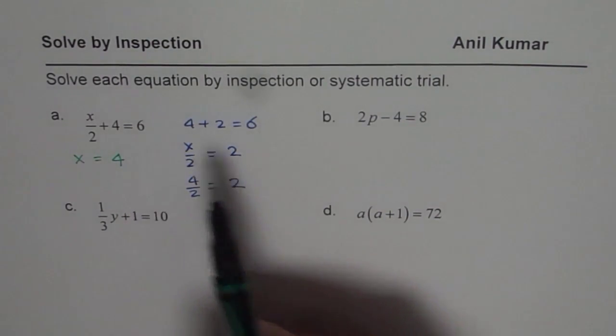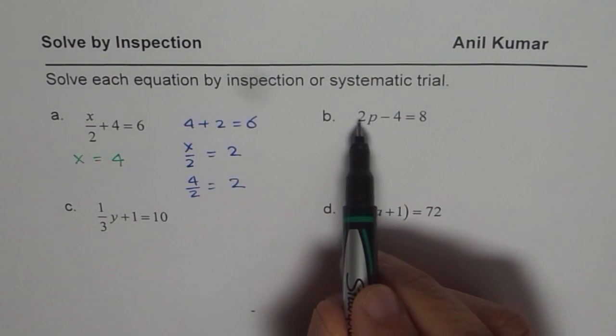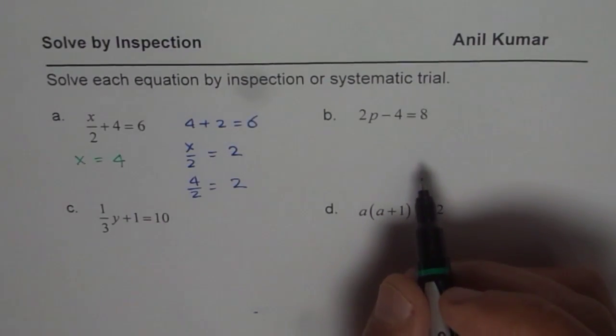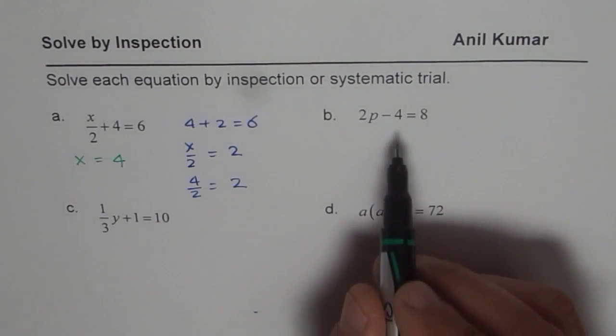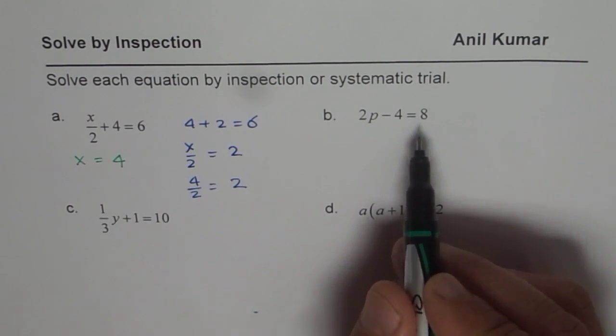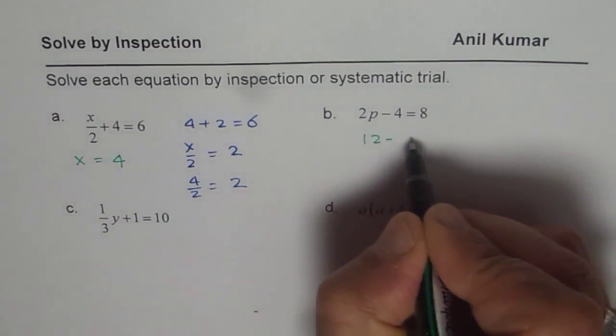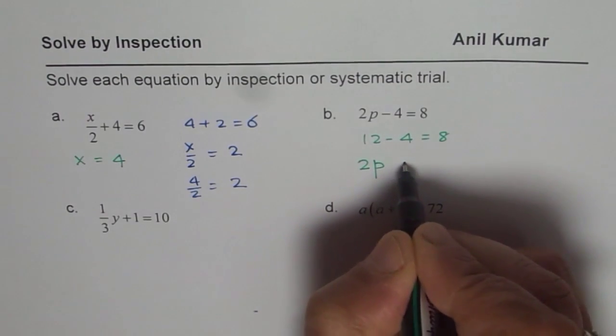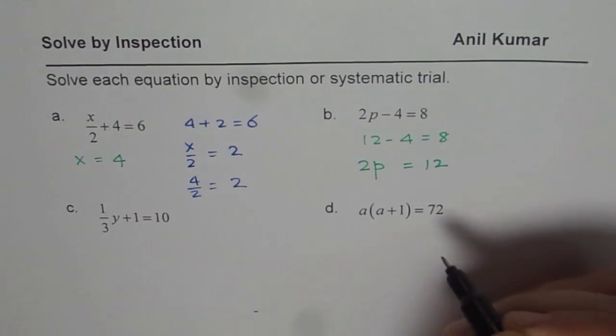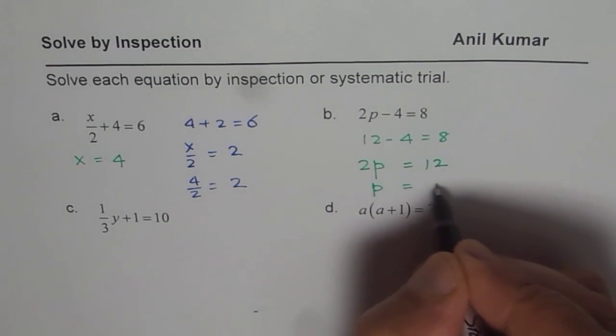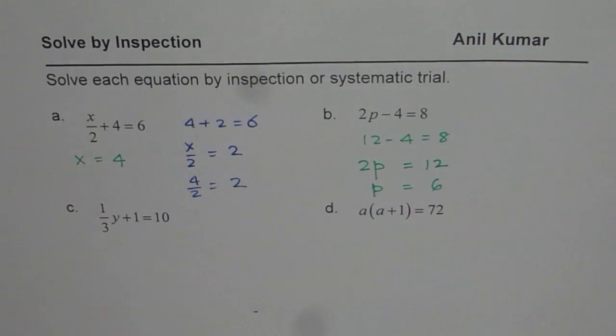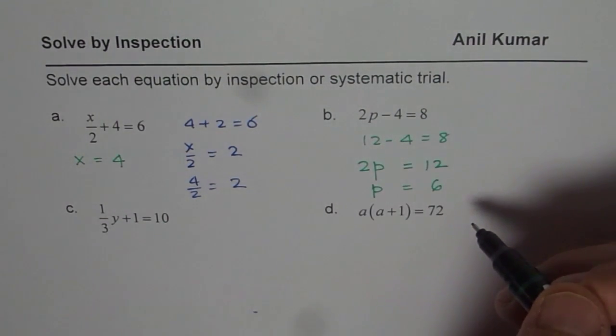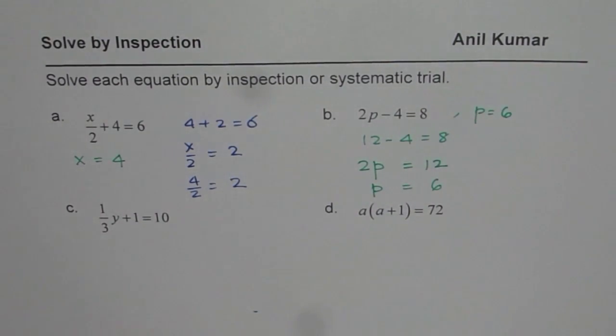Let's try this technique once more with the second equation. It is 2 times p, take away 4 as equal to 8. So the question here is, I have to take away 4 from a number to get 8. So that is, it is 12 minus 4 equals to 8. I know that. That means twice a number is equal to 12. And what should be the number? So p should be 6. So that is how we could get our answer by inspection. And so we get p equals to 6 as our answer.